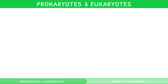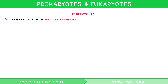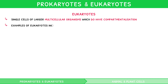Now let's look at eukaryotes. These are single cells of larger, multicellular organisms, which do have compartmentalisation. Examples of eukaryotes would include animals, plants, fungi, and protoctista.